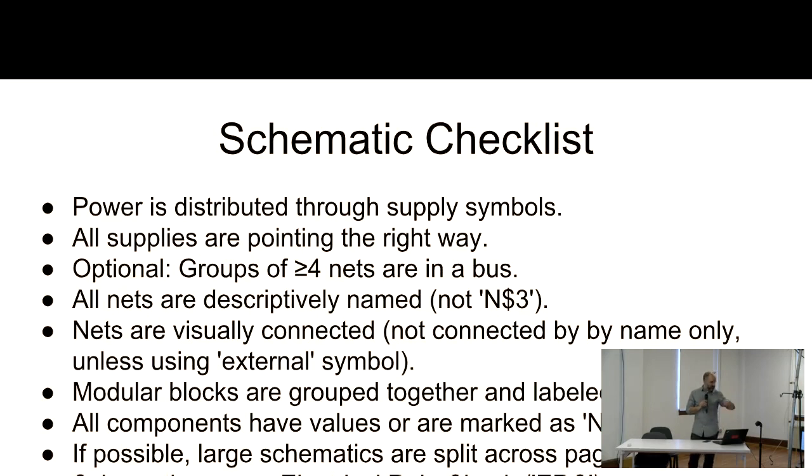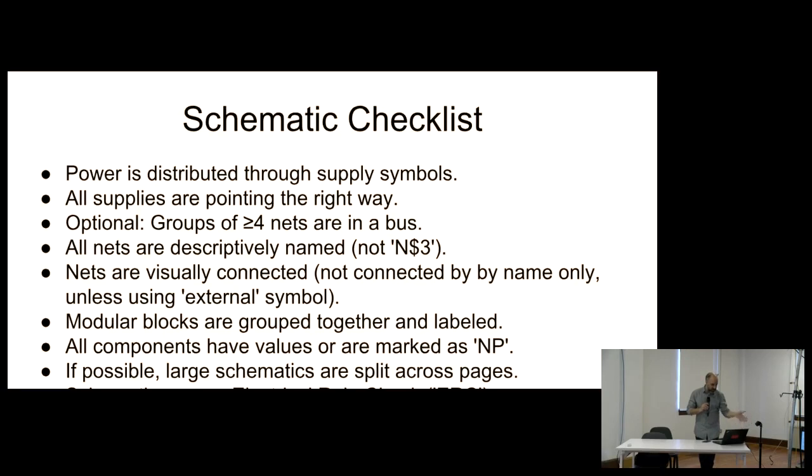OK, there's a quick checklist, and then we've got to go. I don't even need to go through this. You know, make sure that you're using supply symbols. If you have a 5-volt supply, don't run a 5-volt wire that says 5 volts. Just use the supply symbol. All supplies are pointing the right way. You've got nets. Things are named. We've gone through this. That's all. Thank you.